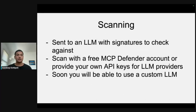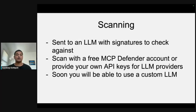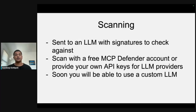All that data is sent to an LLM with a bunch of signatures to check against. If something's detected, it gets blocked; otherwise it's kind of invisible and you don't really think about it. You can scan with a free MCP Defender account, or you can use your own API keys for OpenAI or whatever you use. Soon you'll also be able to use a custom LLM — you can point it at something remote or even local.